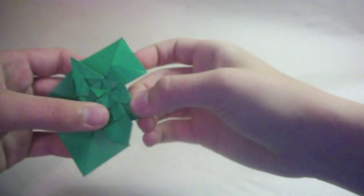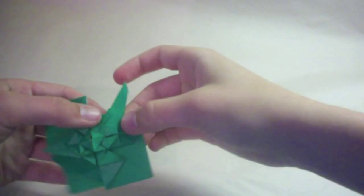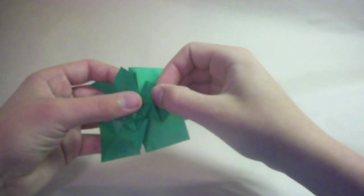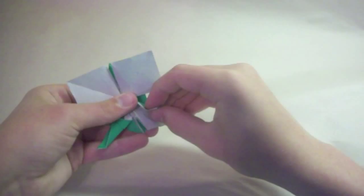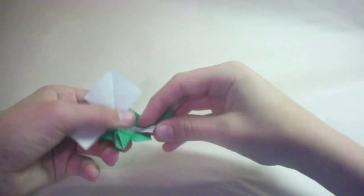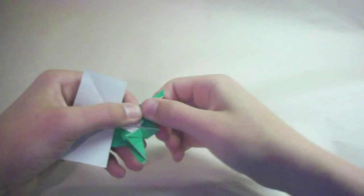And now repeat that on the other side. So you slide this flap over a little bit, then fold the flap up, and narrow the leg, and make a reverse fold here.